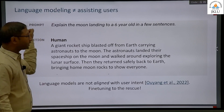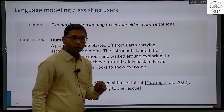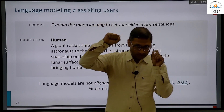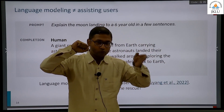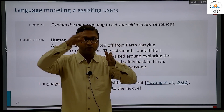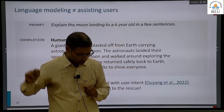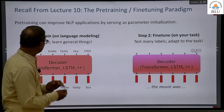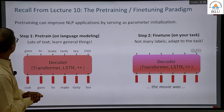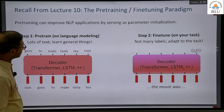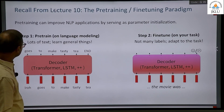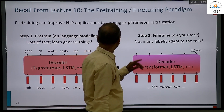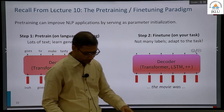Prompting is an important thing here. Prompting means you give a task to your model, where you are supposed to compute the probability of output given input and task. This is something we have seen already.